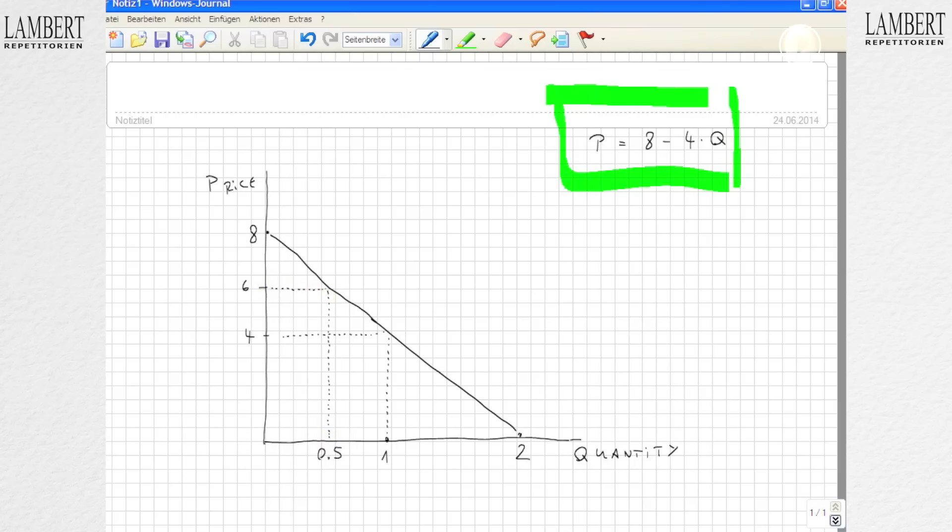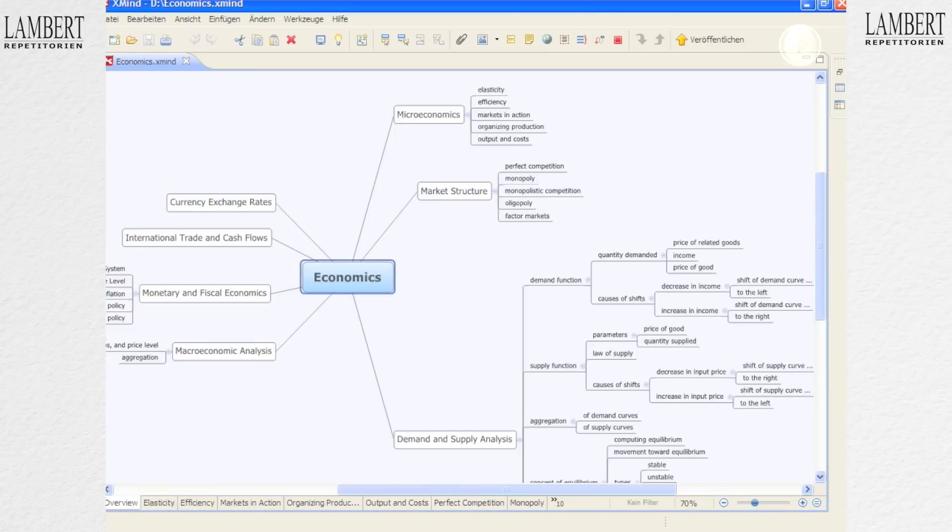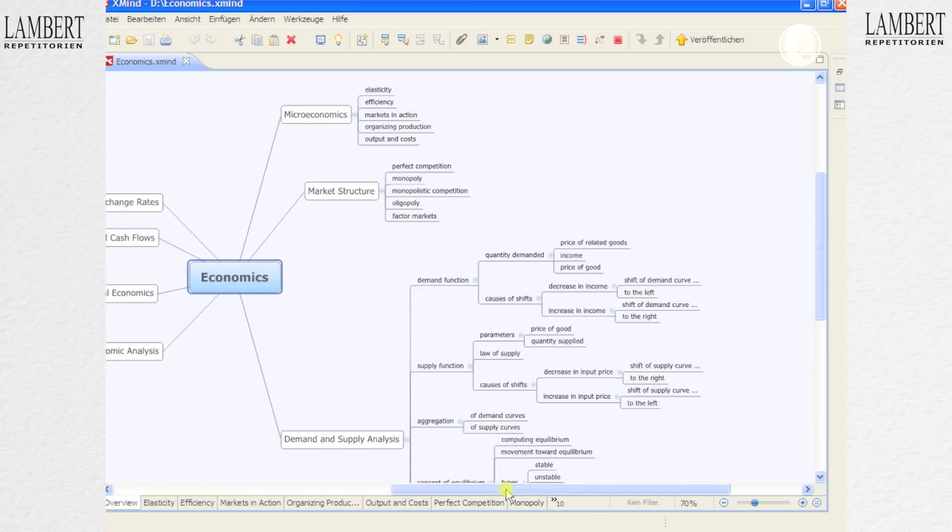So what's next? As we can see here, there are the causes of shifts. What did I say here? Decrease in income. If there is a decrease in income, there is going to be a shift of the demand curve to the left.